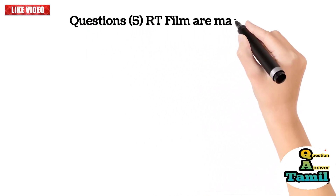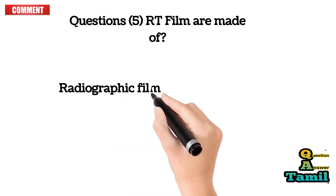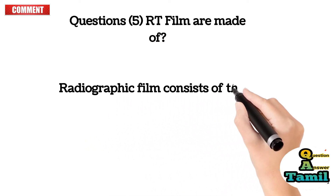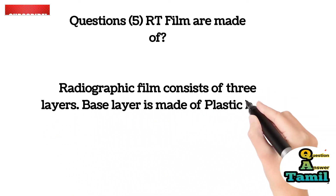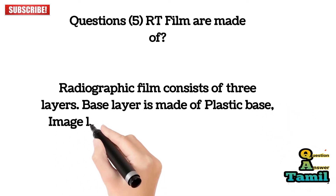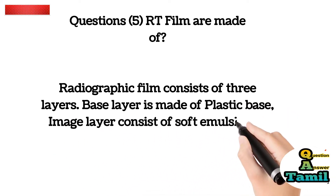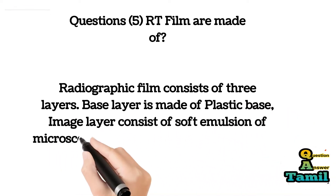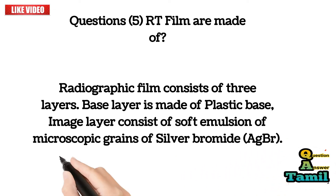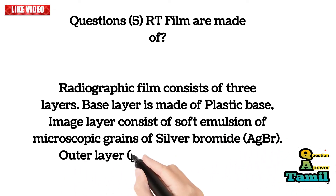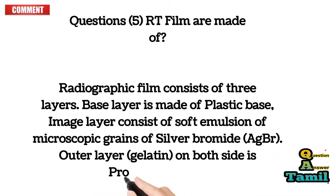Question 5: What are RT films made of? Radiographic film consists of three layers. The base layer is made of plastic. The image layer consists of a soft emulsion of microscopic grains of silver bromide (AgBr). The outer layer is gelatin on both sides, serving as a protective layer.